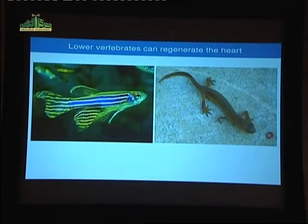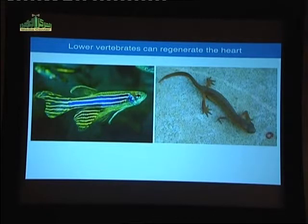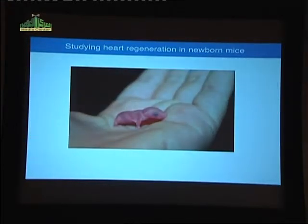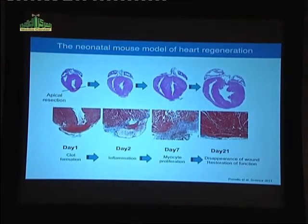We decided to ask a question that surprisingly had not been asked previously: might there be a time in development of mammals when there could be the potential to regenerate portions of the heart? And if we could identify any regenerative window, might we be able to amplify those mechanisms in the setting of adult regeneration? We initiated these studies in mice, beginning during the neonatal period, and developed methods to injure the neonatal mouse heart and monitor its response.